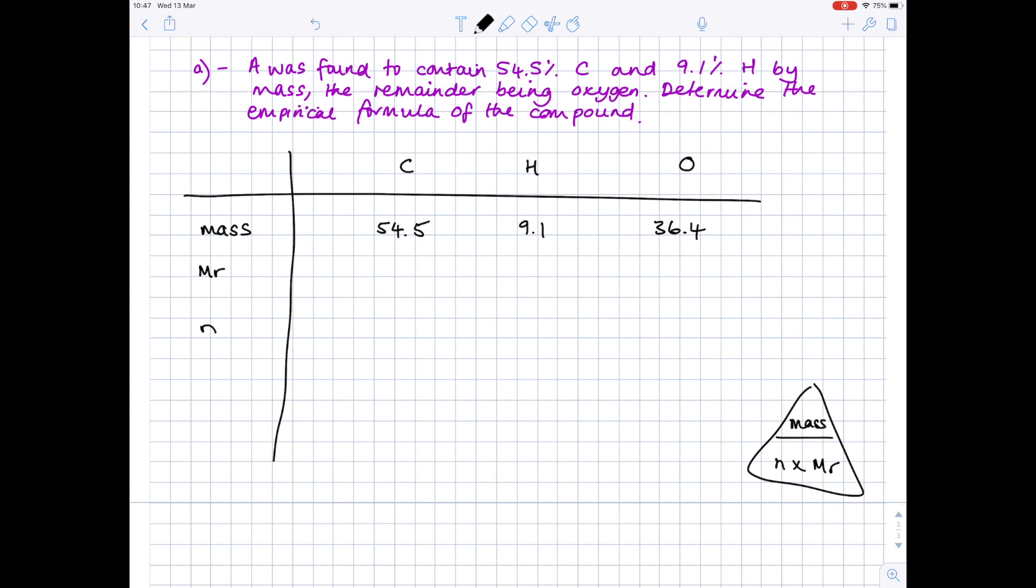Now that MR, use your periodic table. So carbon is 12.01, hydrogen is 1.01, oxygen is 16. Periodic tables will vary slightly, so don't worry if the numbers differ slightly. To work out the number of moles according to our formula triangle, we need to do mass divided by MR. So for carbon, 54.5 divided by 12.01 to get 4.54. Hydrogen, we're doing 9.1 divided by 1.01, and we get 9.0099. For oxygen, 36.4 divided by 16, 2.275.